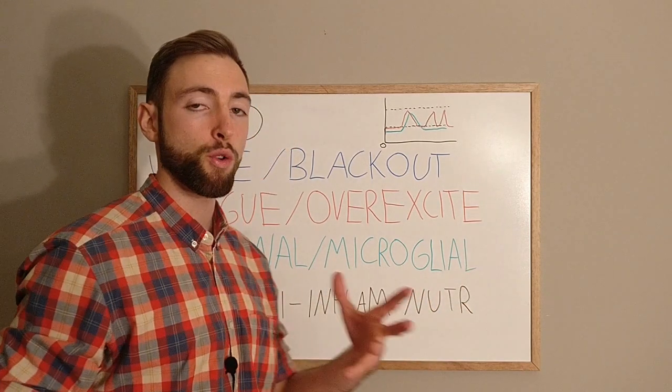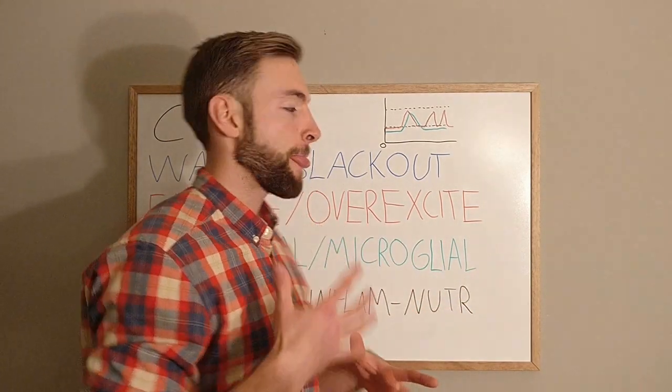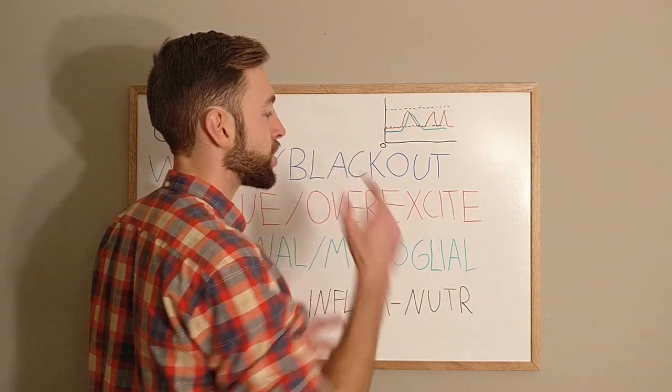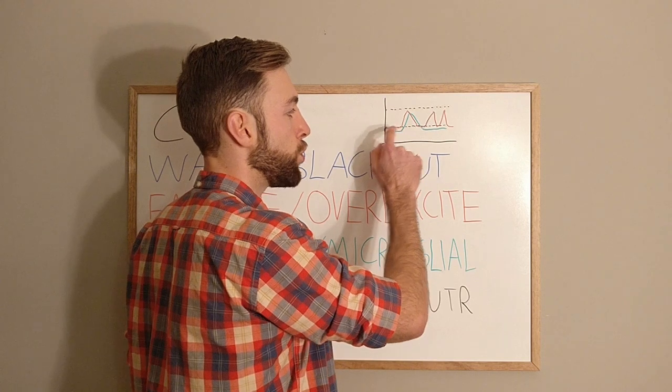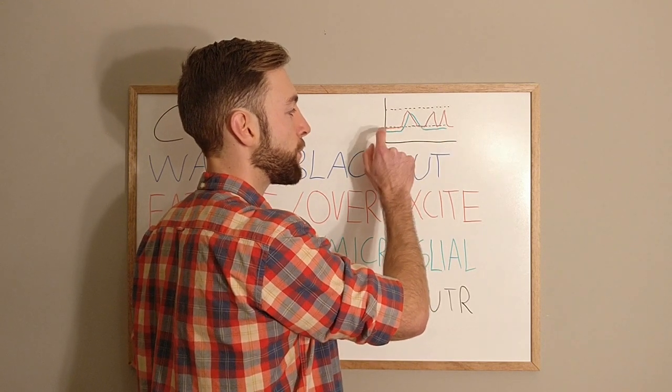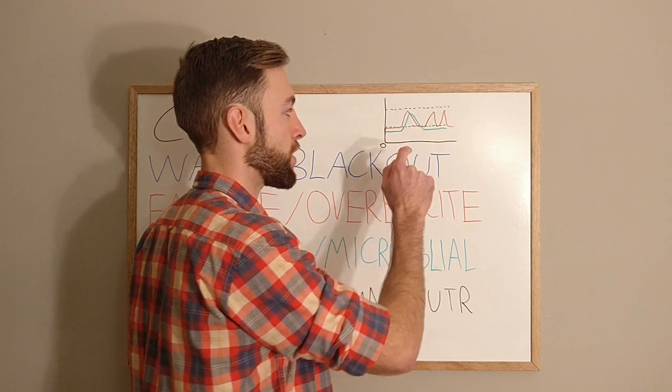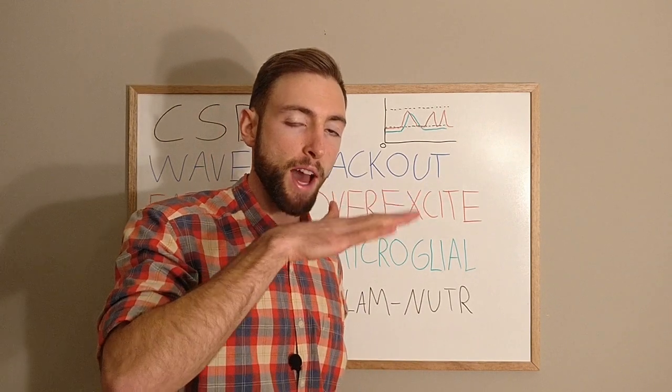But what happens when your neurons start developing problems creating energy is they get very, very close to this threshold. As you see with the red line, it's very, very close to the threshold. It's just barely riding on that threshold.